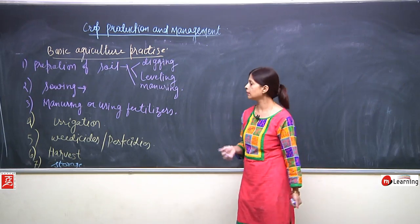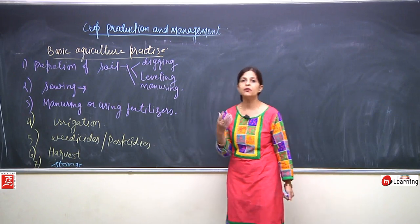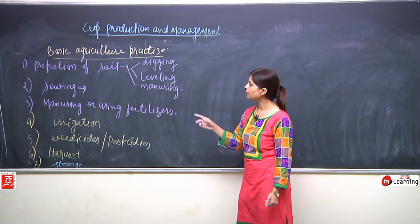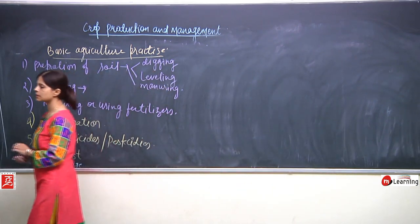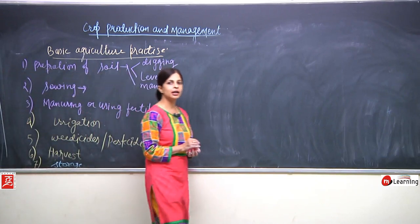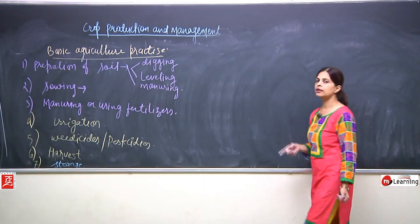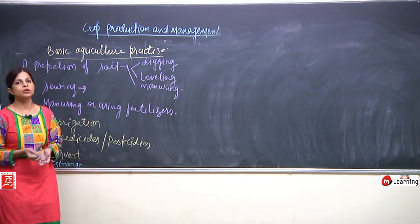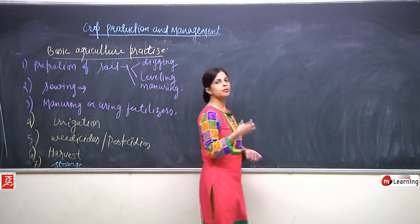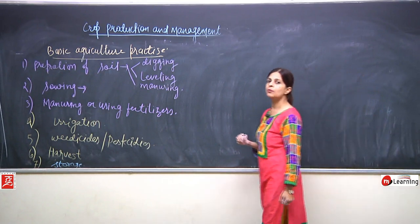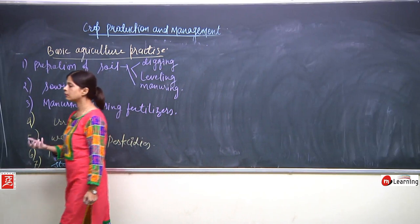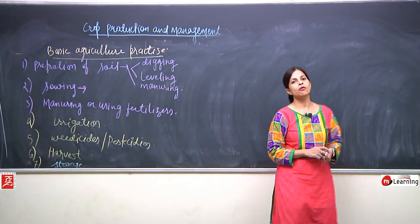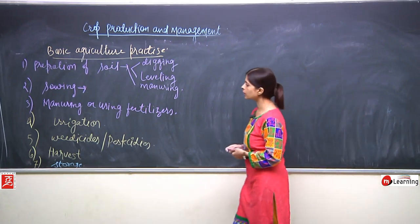Irrigation — what is the meaning of irrigation, how crops can be irrigated, what are the different ways, what were the older methods. Use of weedicides and pesticides — what is the meaning of weeds, what is a pest, what are pesticides. Harvesting means to cut the crops — we will study winnowing, threshing. Storage — it is very important to store crops properly, protect them from rodents and moisture. We will learn old and modern ways of storing crops.